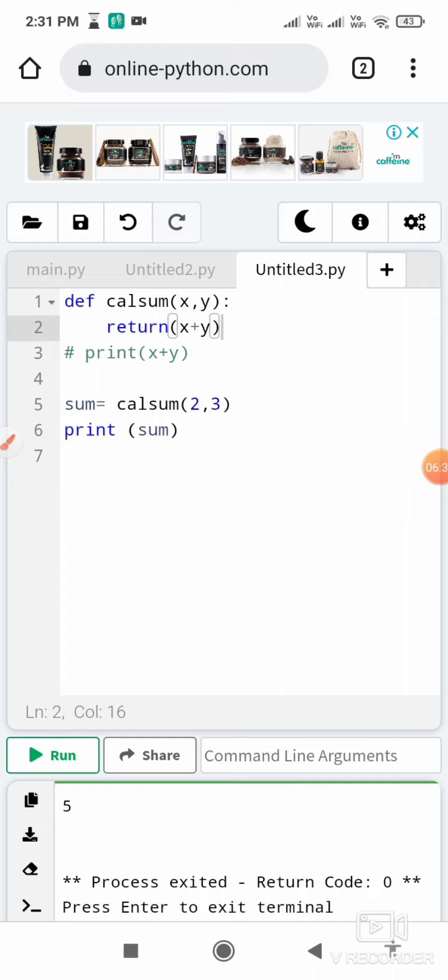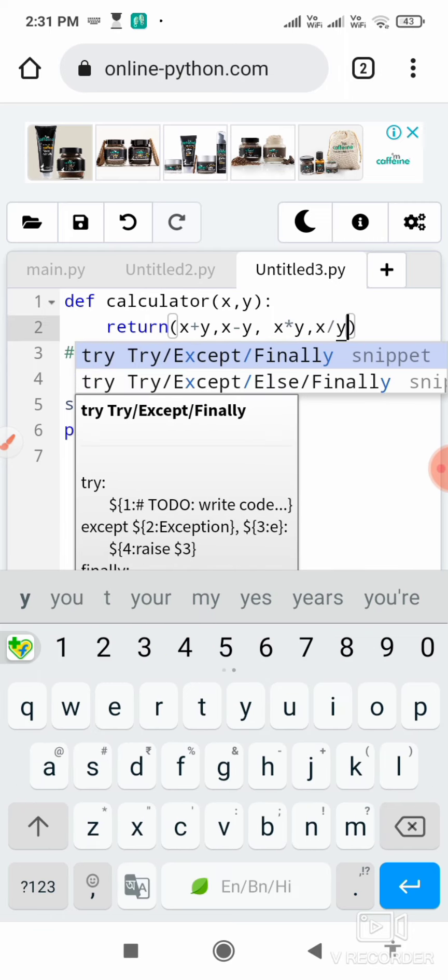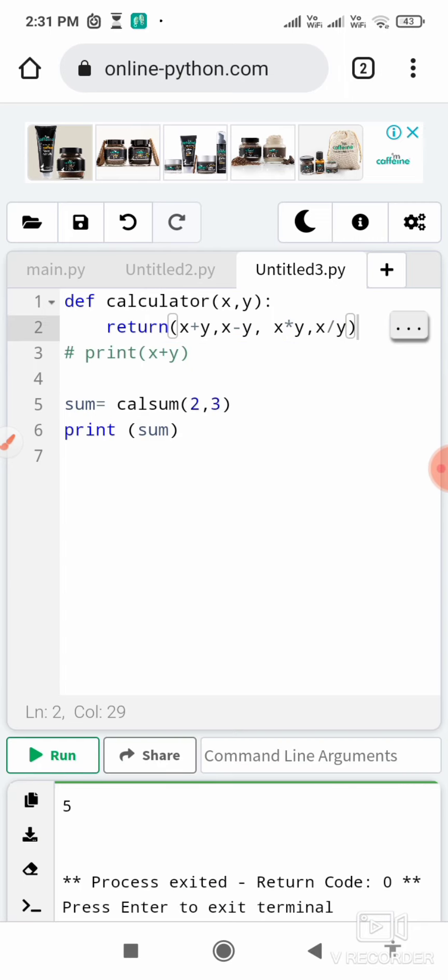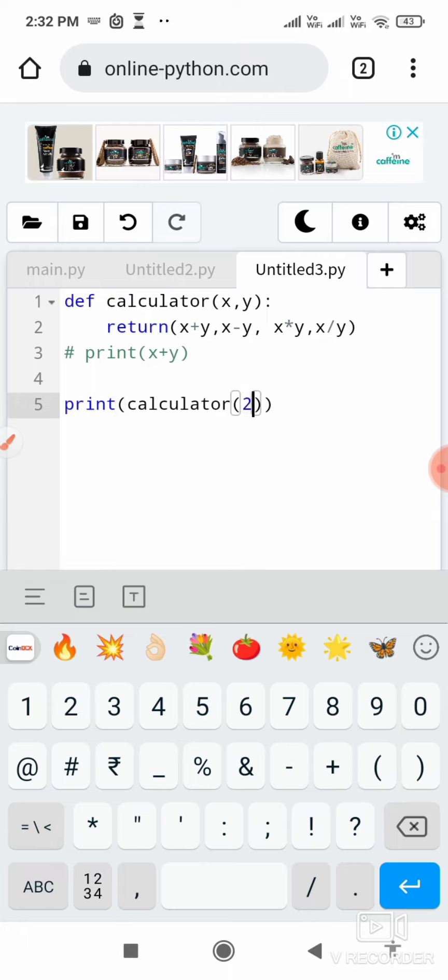The next program is about the calculator sum. I'll rename this as calculator with the same function(x, y). I will return x plus y, return x minus y, return x into y, and return x divided by y. These are the return values I will get. What I'll do is print calculator(5, 2).